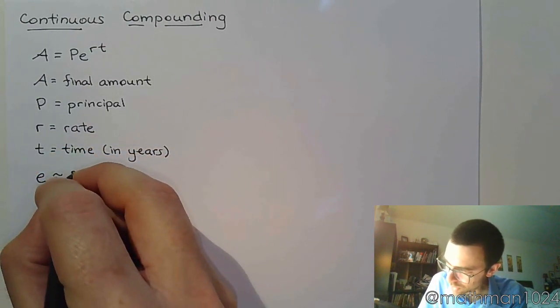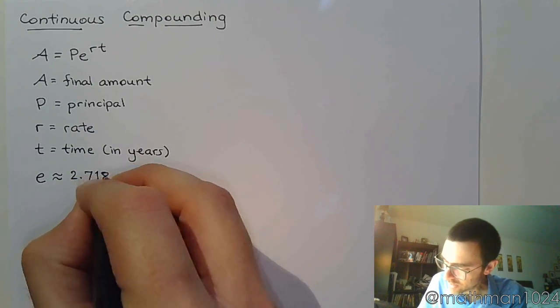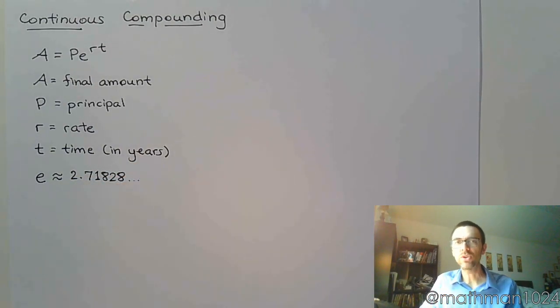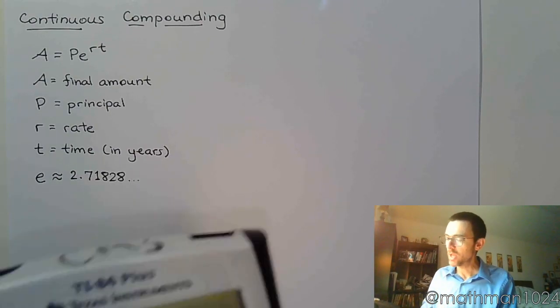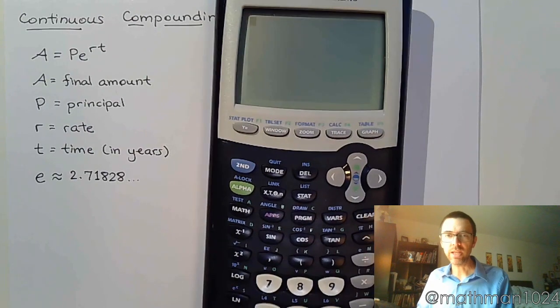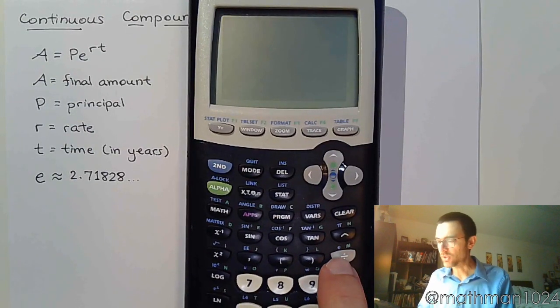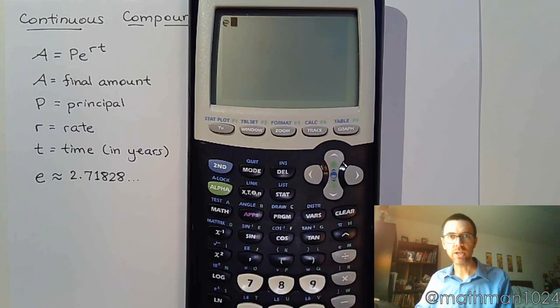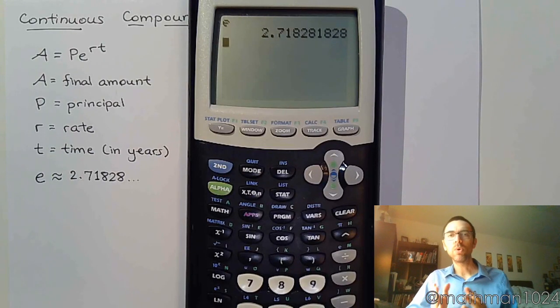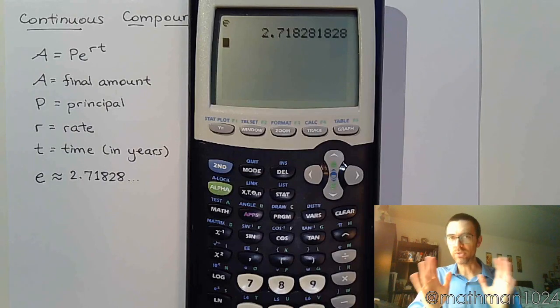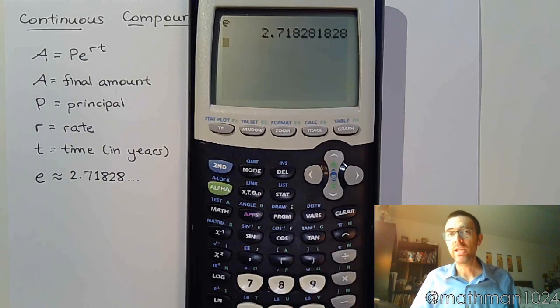And e is approximately equal to 2.71828 and so on. This is as important of a number as pi. In fact, both e and pi are irrational numbers. And not only that, they also have their own special buttons here on the calculator. It looks like there's a pattern that it goes 2.718281828, but it kind of falls off after that. So it does not have a pattern in terms of its decimal representation.